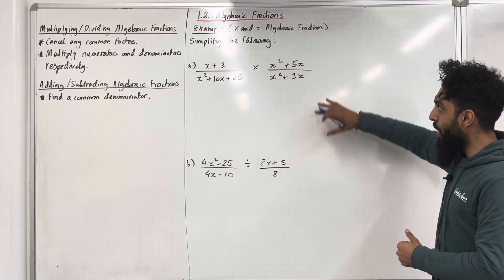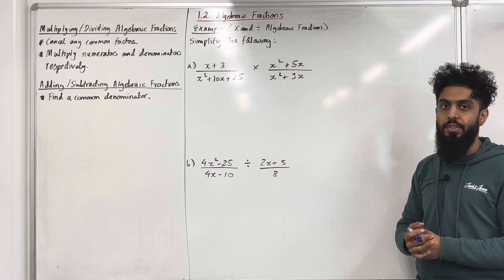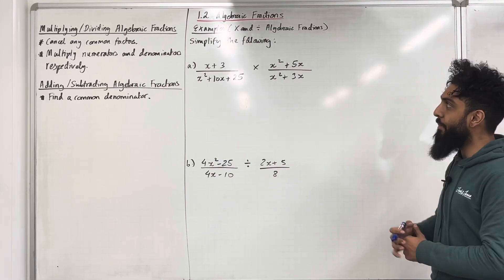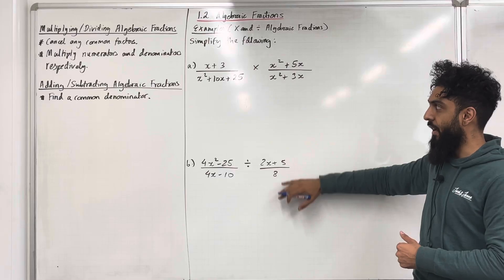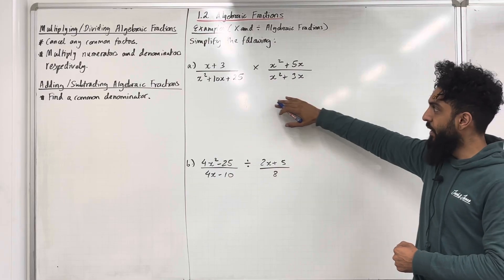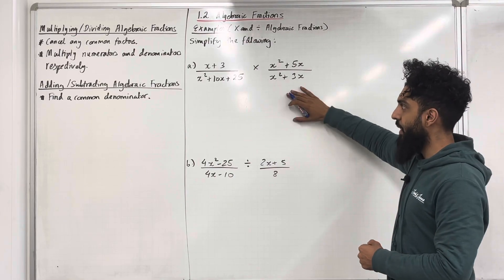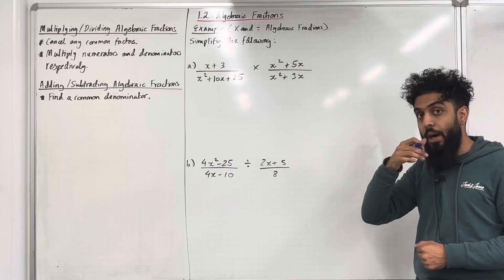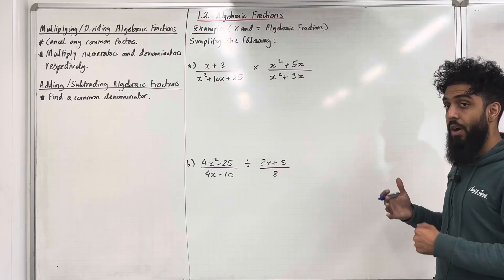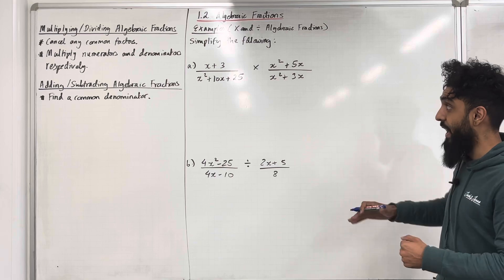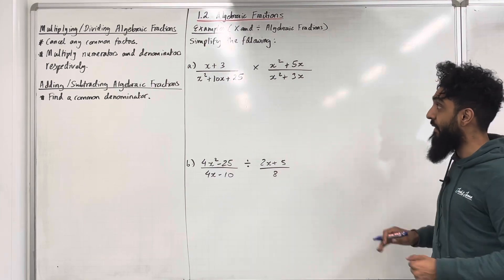Now I'm going to go through some examples on multiplying and dividing algebraic fractions. Simplify the following, part A and part B. Let's start off with part A. Over here we are multiplying two fractions. We need to try and cancel out any common factors, but before we do that, we're going to try and factorise what can be factorised in these particular fractions.